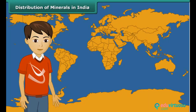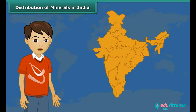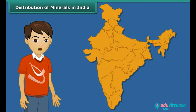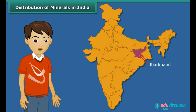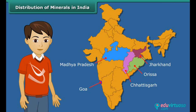Now look at the maps to study the distribution of minerals in India. India is the largest producer and exporter of mica in the world. Major limestone producing states include Bihar, Jharkhand, Odisha, Madhya Pradesh, Chhattisgarh, Rajasthan, Gujarat, and Tamil Nadu. Iron is found mainly in Jharkhand, Odisha, Chhattisgarh, Madhya Pradesh, Goa, Maharashtra, and Karnataka.